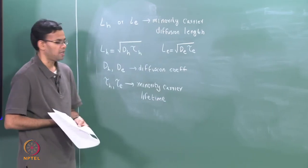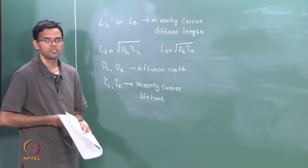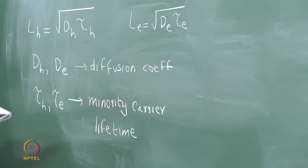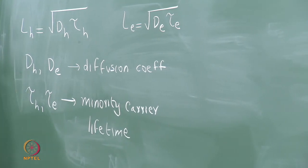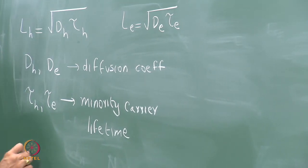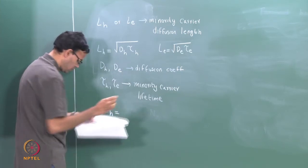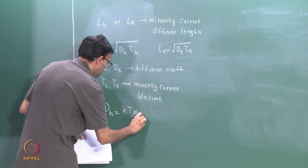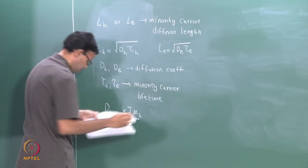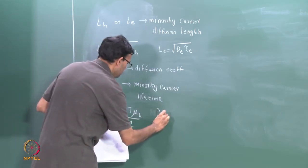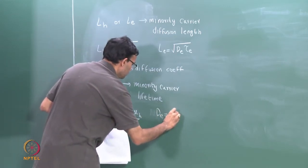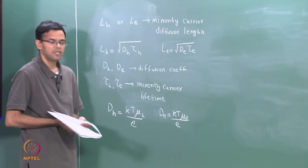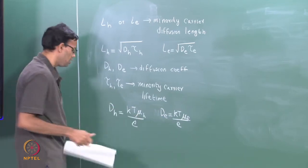D_H and D_E are diffusion coefficients, and tau_H and tau_E are the minority carrier lifetimes. These define the time the electrons and holes can travel in the material before they recombine and get destroyed. D_H and D_E are related to the mobilities: D_H equals kT mu_H over e, and D_E equals kT mu_E over e, where mu_H and mu_E are the mobilities.